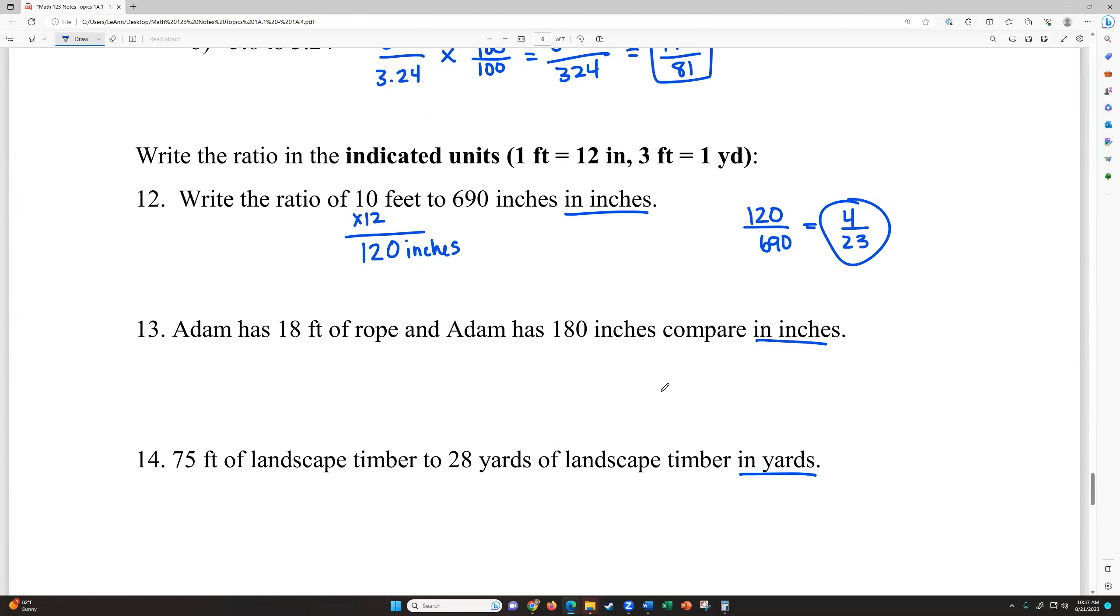Adam has 18 feet of rope and he also has 180 inches to compare and he wants to compare in inches. So again, we need to convert the feet to inches. 18 times 12 is 216 inches. I'm using this fact right here. And then he's going to compare that to the 180. So 216 over 180. I get that that reduces down to six over five.